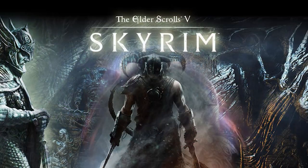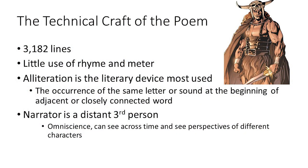Modern retellings of Beowulf have definitely followed Tolkien's advice — if you've ever seen Skyrim, it's basically a modern retelling of Beowulf. Beowulf has 3,182 lines and does not have any set form of rhyme or meter. The literary device that really holds the poem together is alliteration, where the beginning consonant sounds of words are the same. The point of view is told from a pretty distant third person — an all-knowing narrator that can skip around in time and follow different people. If you've read the Song of Ice and Fire series, that's very close third person; Beowulf is very distant third person.